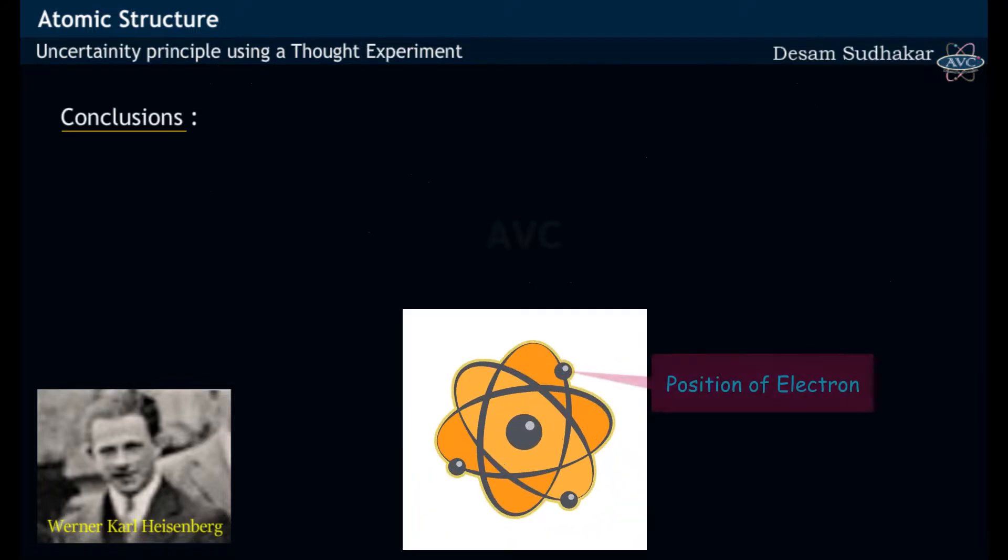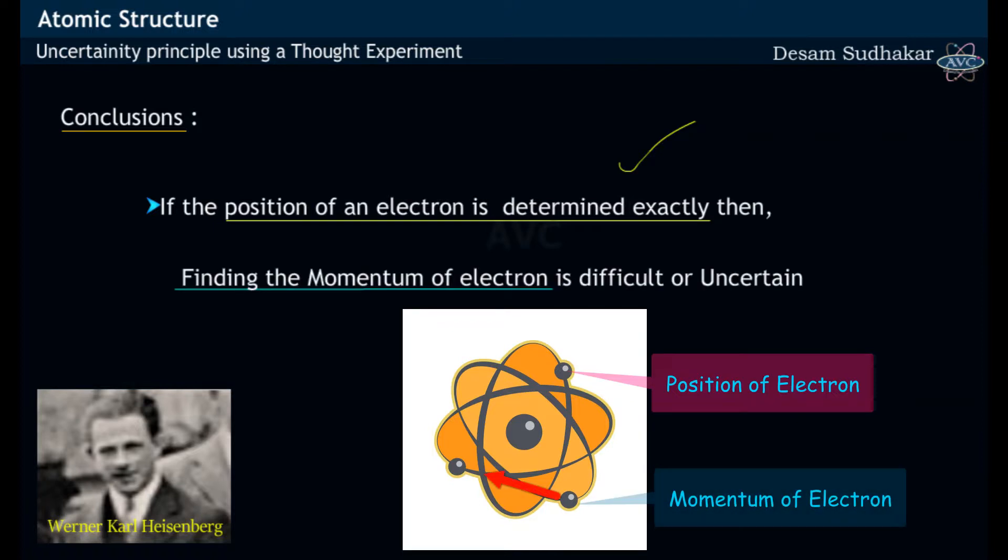Heisenberg has concluded that if the position of an electron is determined exactly, then finding of momentum of electron would be uncertain.